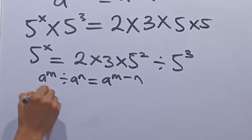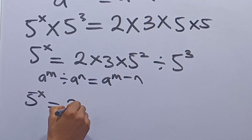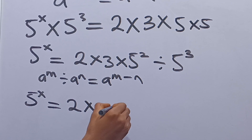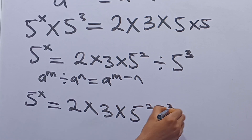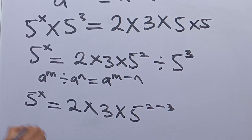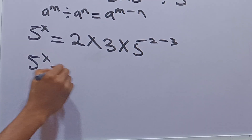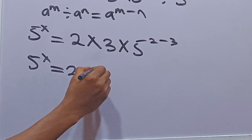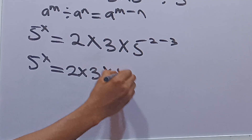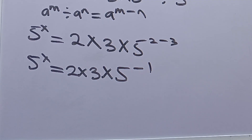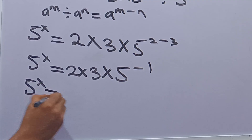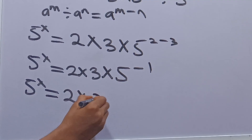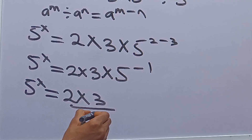Hence, we have 5 raised to the power x is equal to 2 multiplied by 3 times 5 raised to the power 2 minus 3, which gives 5 raised to the power x equal to 2 multiplied by 3 multiplied by 5 raised to the power negative 1. From here we can say this is equal to 5 raised to the power x equal to 2 multiplied by 3 divided by 5.